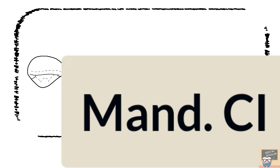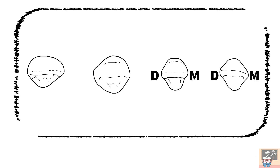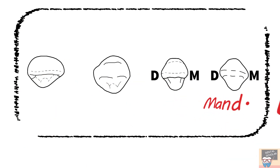In the fourth diagram, you will notice that the incisal edge is not straight — it curves lingually in the distal portion. And the cingulum appears distally displaced. So these features will help you identify the mandibular lateral incisor.